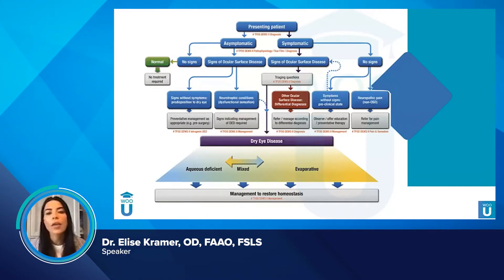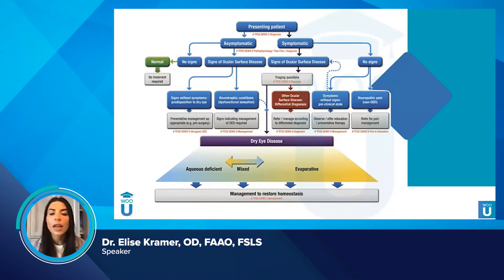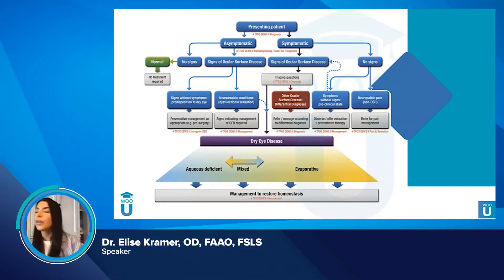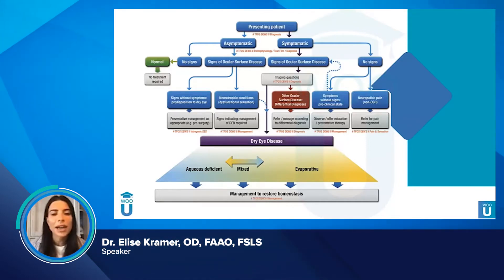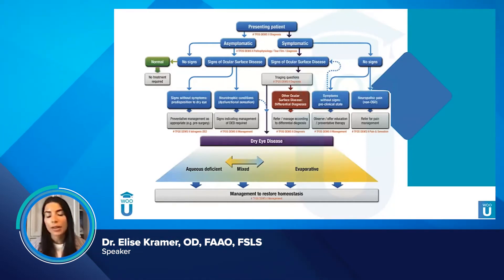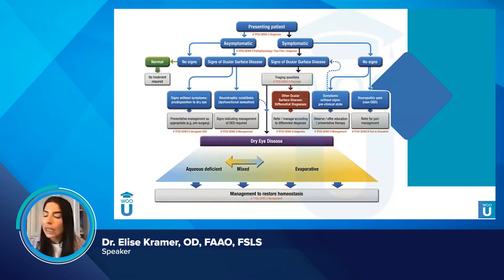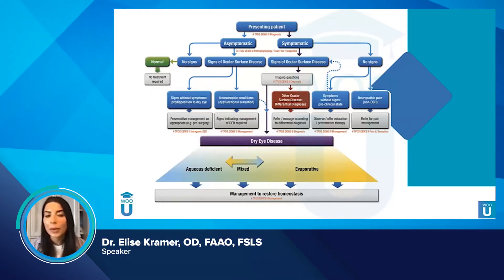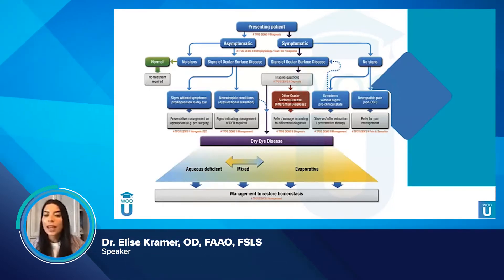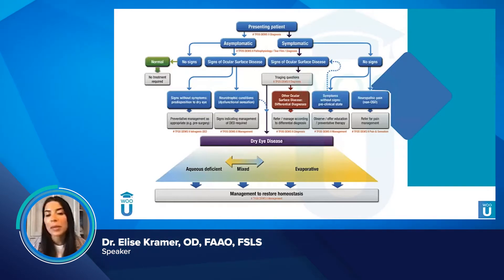For symptomatic patients with signs, you have the full list of differential diagnoses. Once you identify dry eye disease, you have to identify what type it is, because there are two different types — and they can be mixed together. You have aqueous deficient dry eye and evaporative dry eye; evaporative dry eye is actually a little more common, but the etiology can be mixed.